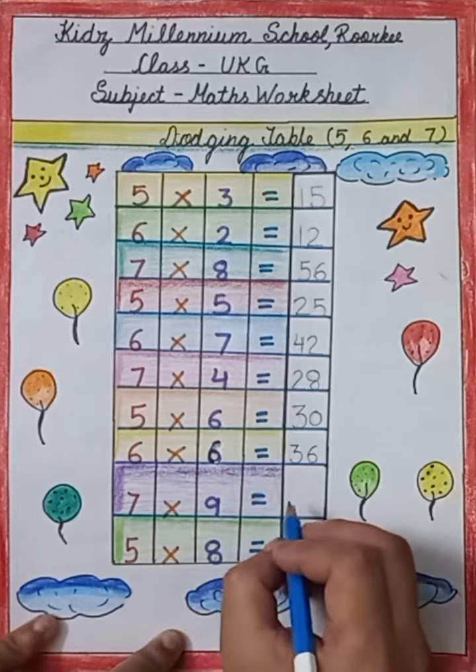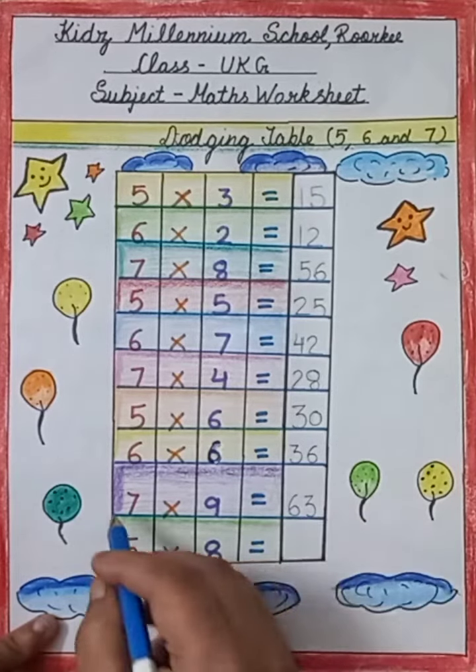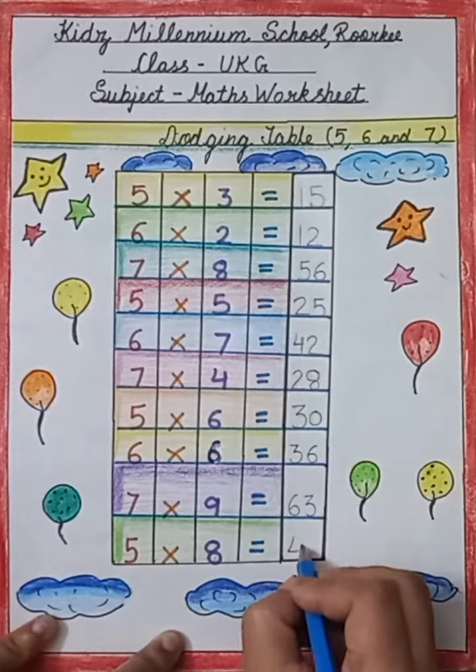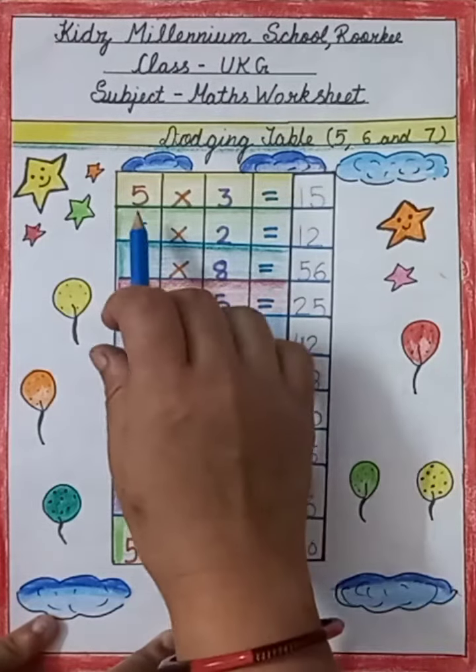This is 7 into 9 equals to 63, and we will speak like this: 7 9 j 63. This is 5 into 8 equals to 40, and we will speak like this: 5 8 j 40.